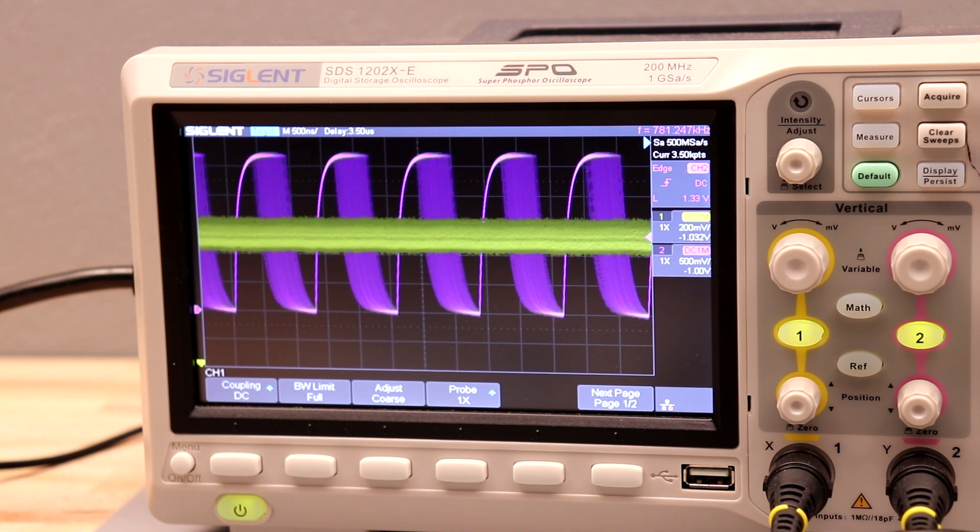The PWM is varying the duty cycle to create the analog audio and the low pass filter is averaging the voltage out to create something that actually looks like audio.